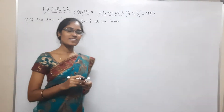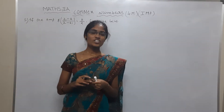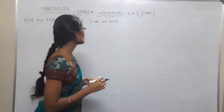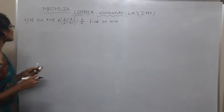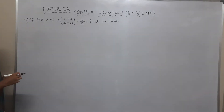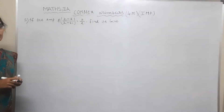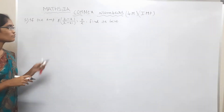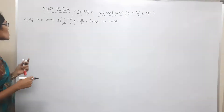Welcome to Six-Time Ads Academy. Next, see the continuation: Mark 5th of some complex numbers. If the amplitude of Z minus 2 by Z minus 6i is equal to pi by 2, find its locus. This is the question.